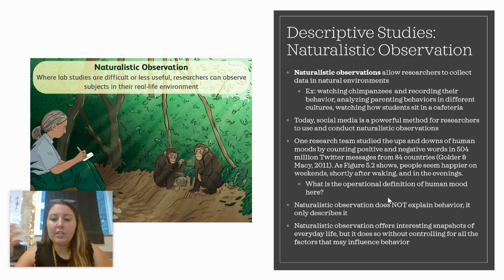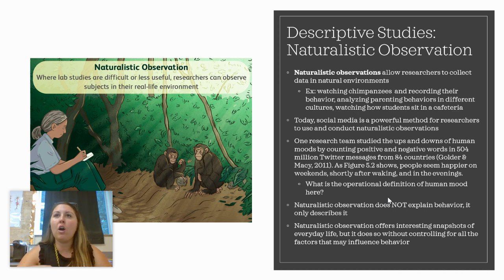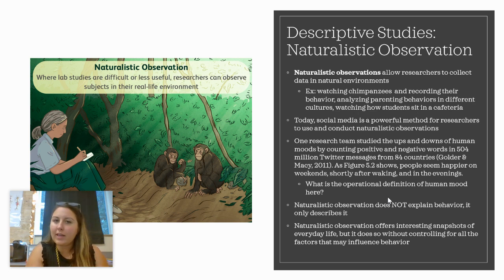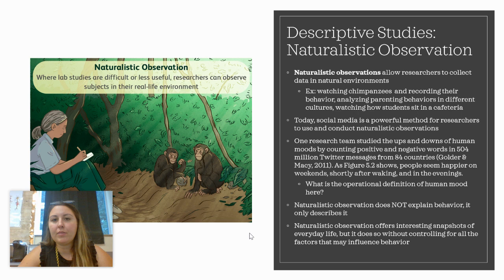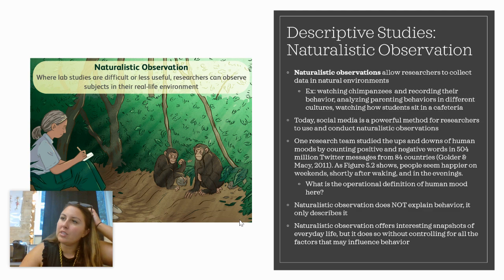Naturalistic observation offers interesting snapshots of everyday life, but a big issue is that it has no control over the situation, so various factors could be influencing the result — which is why we can't use it to explain behavior, only document it. But it has still produced really interesting findings. For example, that animal researcher found, just by watching chimpanzees, that they used tools. Before that, it was only thought that humans used tools.